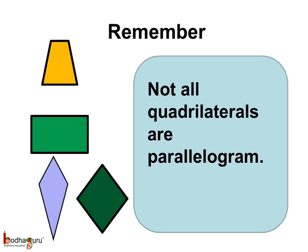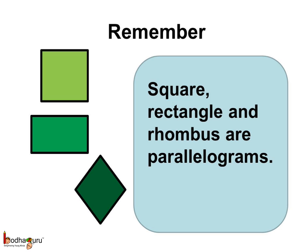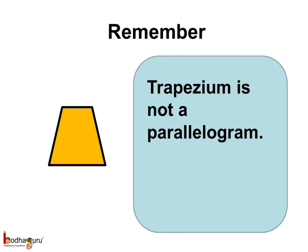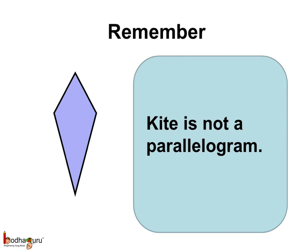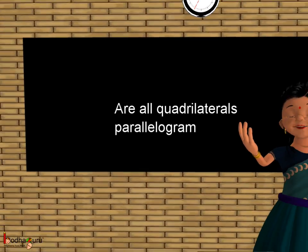So, remember children, not all quadrilaterals are parallelograms. A square, a rectangle, and a rhombus are parallelograms. This is a trapezium, and it is not a parallelogram, as the pair of opposite sides are not parallel. Same way, this is a kite, and a kite is also not a parallelogram, since the opposite sides are not parallel. So, now we know not all the quadrilaterals are parallelograms.